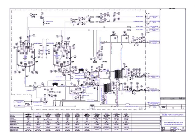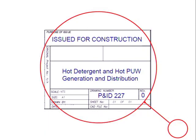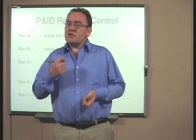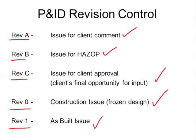If you go and look at the bottom right-hand corner of the P&ID, you will see the revision. In our case, the revision is REV0 and it's issued for construction. Typically, revisions are issued as follows: Revision A is issued for client comments; Revision B for the hazard operability study; Revision C for client approval, which is the client's final opportunity for input. Revision 0, like our P&ID, is issued for construction — the design is now frozen. Once the job is complete, we do an as-built version of the P&ID, called REV1, the as-built issue.